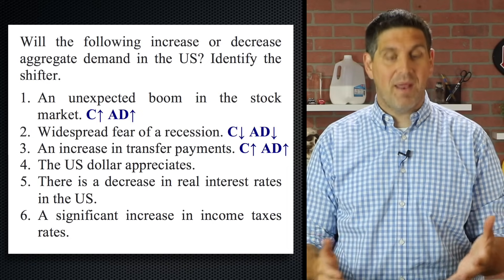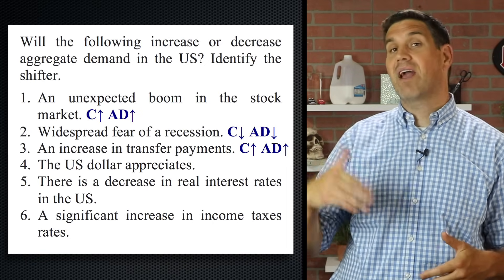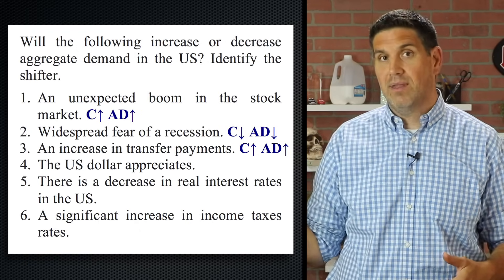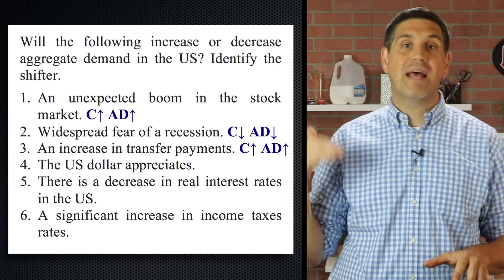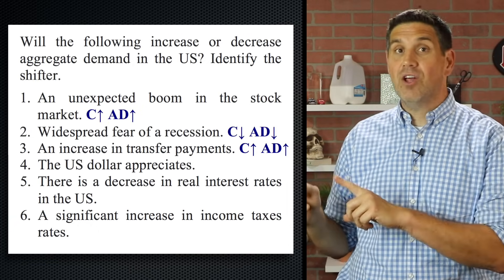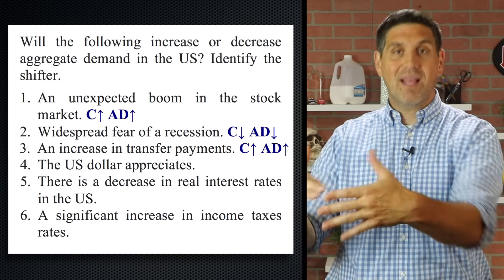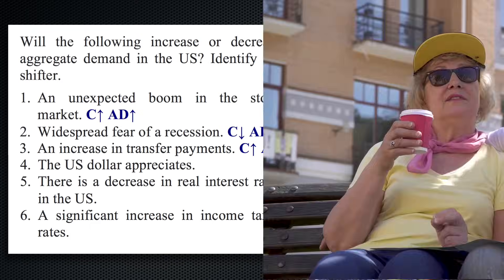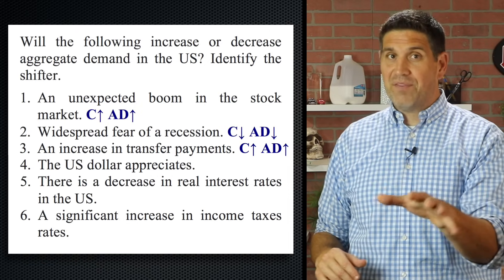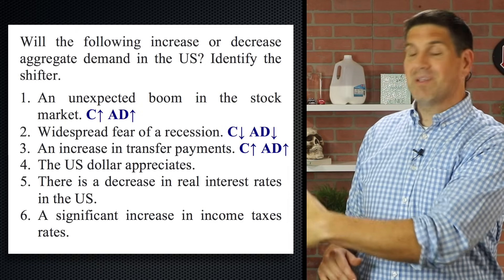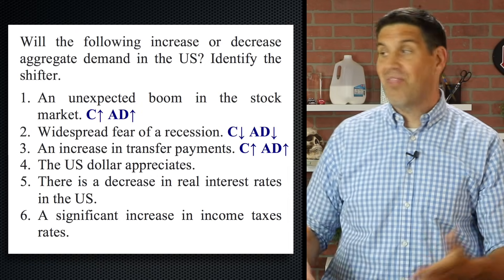If this was government spending on the military or infrastructure like roads and bridges, then yes, it would be government spending and it would increase aggregate demand. But transfer payments don't count in GDP, so we don't count it as government spending — but it does still increase aggregate demand. This is because people are going to spend that money they get from the government. So if your grandma gets a check, that doesn't count in GDP, but when she spends that money, that does count in GDP. Even if you got this wrong and put it as government spending, that's okay — just understand the idea that it's going to increase aggregate demand. That's more important.